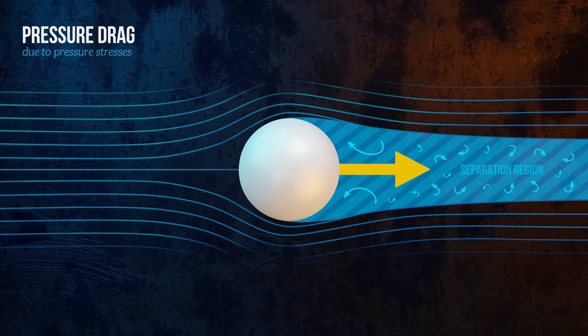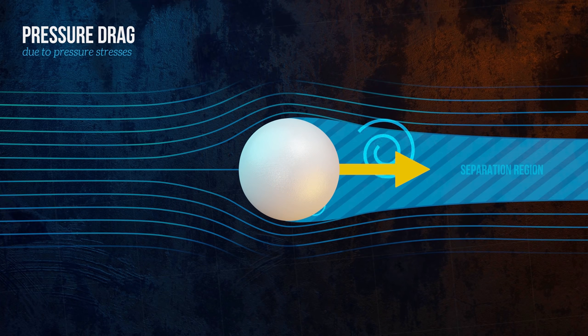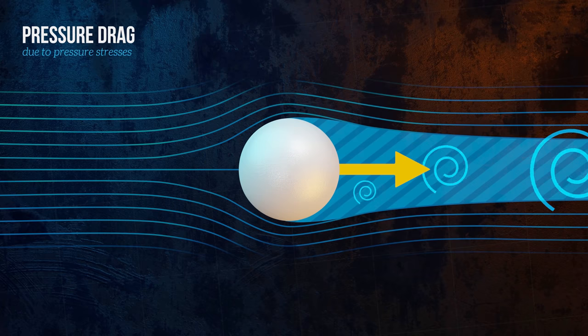If you're trying to reduce drag forces, you'll want to minimize flow separation at all costs. Flow separation can also cause vortex shedding, which can generate unwanted vibrations and instability.